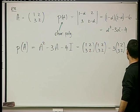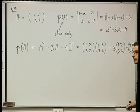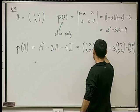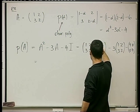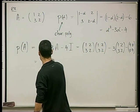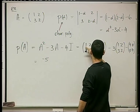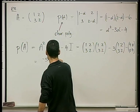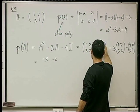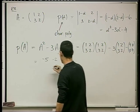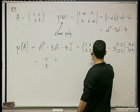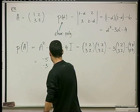4I is [[4,0],[0,4]]. Now I need to compute A squared. That gives [[7, 6], [9, 10]].